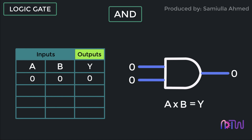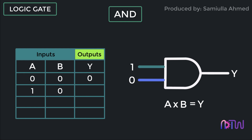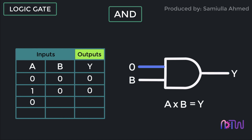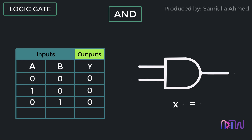You can also get the output of the AND gate by doing A multiplied by B. Since A equals zero and B equals zero, zero times zero gives zero. The second set of inputs: A equals one and B equals zero. Since only A has an input and B doesn't, the output will be zero — one times zero equals zero. Similarly, for the third input A equals zero and B equals one, A times B results in output Y equals zero.